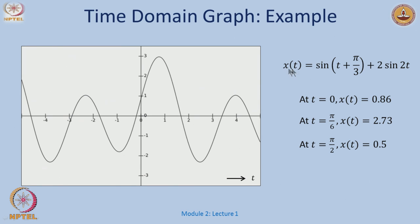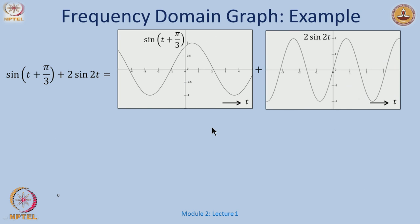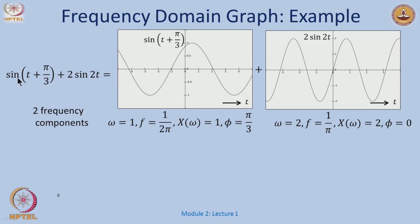Let us take a simple signal x(t) which is a composition of two signals: sin(t + π/3) + 2sin(2t). At t=0, sin(π/3) gives a certain value; at t=π/6 the value becomes 2.7, and so on — giving a nice graph. A sinusoidal signal is typically written as A·sin(ωt + φ), with amplitude, frequency, and phase shift.